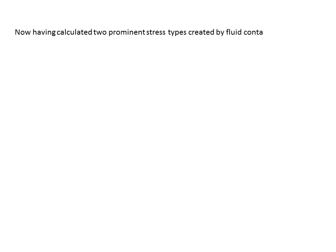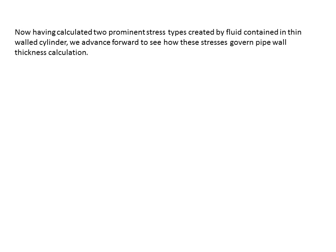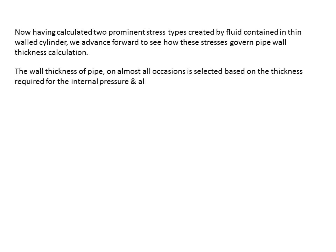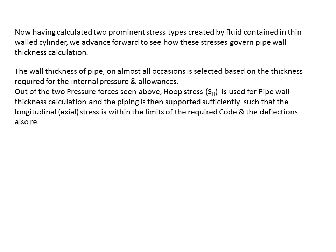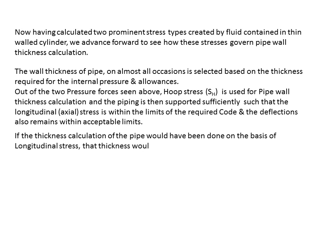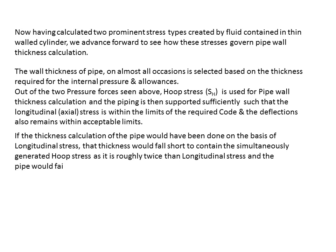Having calculated the two prominent stress types created by fluid in a thin-walled cylinder, we now see how these stresses govern pipe wall thickness calculation. The wall thickness is almost always selected based on the thickness required for internal pressure plus allowances. Hoop stress is used for pipe wall thickness calculation. The piping is then supported so that axial stress remains within code limits and deflections remain acceptable. If thickness were based on longitudinal stress alone, it would be insufficient to contain the simultaneously generated hoop stress — roughly twice as large — and the pipe would fail circumferentially.